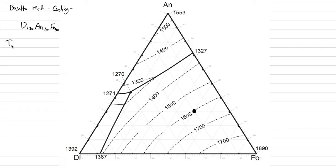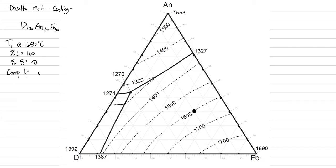Our T1 will be at 1650 degrees C. What is the temperature where the first crystal will form at this point? It's at 1600, because that's where the dot sits on the temperature contour. So at T1 = 1650°C, we have percent liquid = 100, percent solid = 0. The composition of the liquid is the same as what we started with: Di20, An30, Fo50. The composition of the solid is not applicable. We have just started.